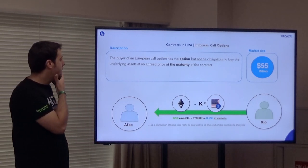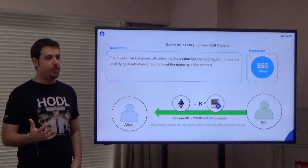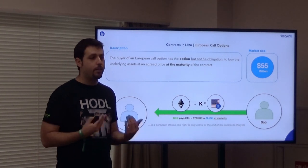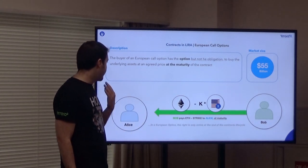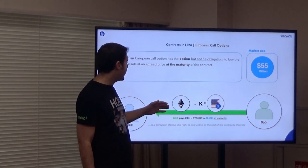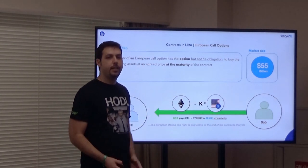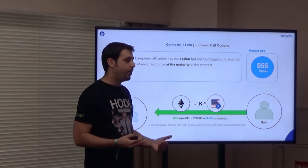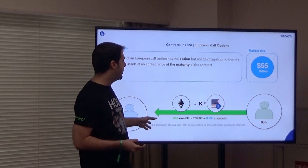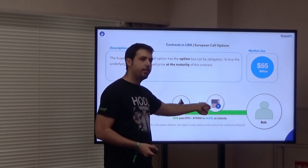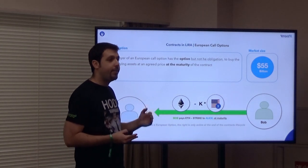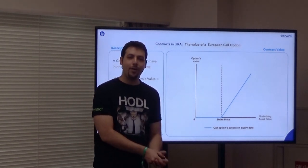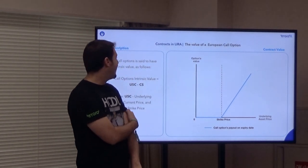We want to talk more about call options. When you have a call option, you have the option — not the obligation — to run a specific contract. There's a strike price K. If we think about trading ETH against dollars and set K to 150, it means that if the ETH price is over $150, it will make sense for Alice to enforce that Bob pays her the difference. But if the price is below that, she doesn't have to activate it and the value is essentially zero.